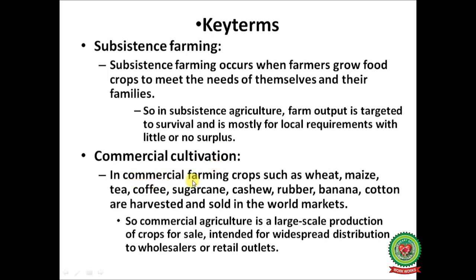Next one is commercial cultivation. In commercial farming, crops such as wheat, maize, tea, coffee, sugarcane, cashew, rubber, banana, and cotton are harvested and sold in the world market. Commercial agriculture is a large-scale production of crops for sale, intended for wide supply and distribution to wholesalers or retail outlets.